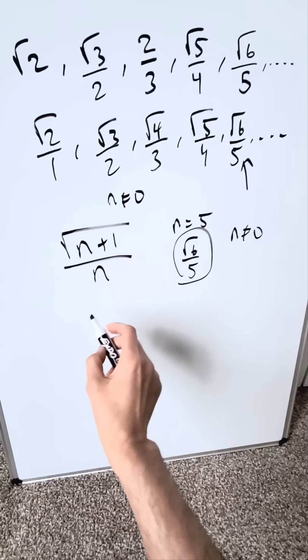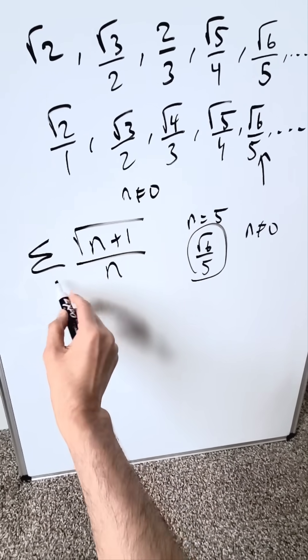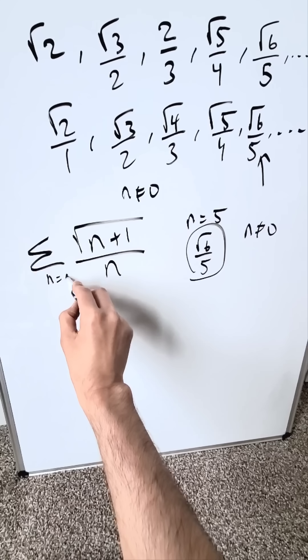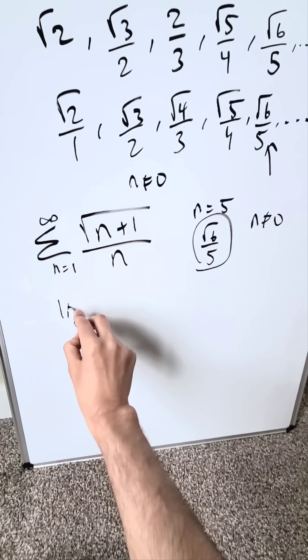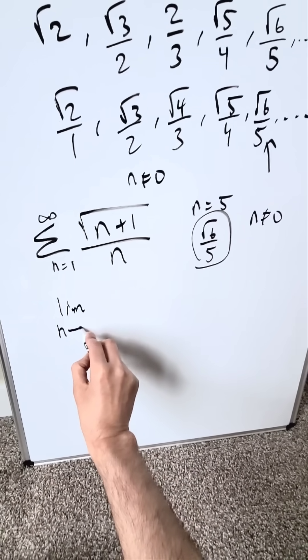How does this behave at infinity? You know your rule in terms of sequence would be N equals 1 up to infinity. In terms of limit, you can write it as the limit as N approaches infinity.